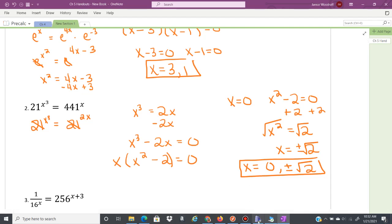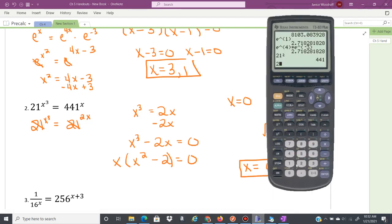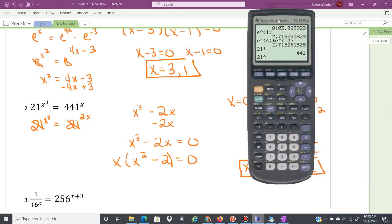And you can go ahead and you can check that if you'd like. Take a look here. You've got 21. So if you wanted to check, let's just check the positive square root. So we would go parentheses, square root of 2. And then we're going to cube that. See what number that gives us. And then 441 to the square root of 2. It's the same number. So it works. So if you check that, you get the same number. Then it works.